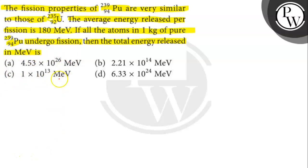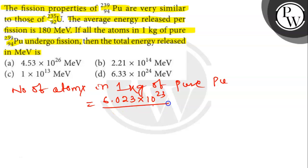Let's find out. So the number of atoms in 1 kg of pure Pu is equal to 6.023 × 10^23 divided by 239 times 1000, which is 2.52 × 10^24.